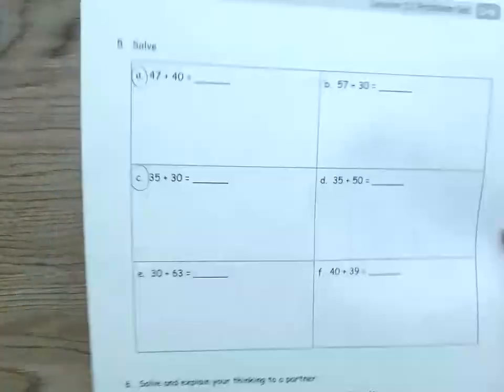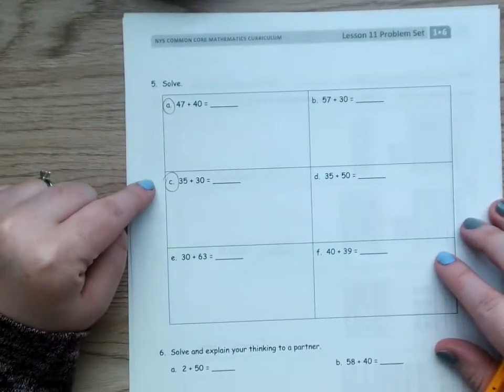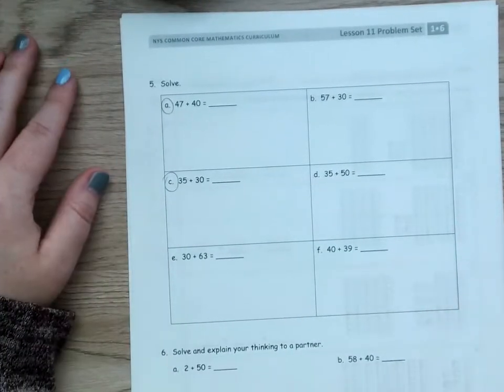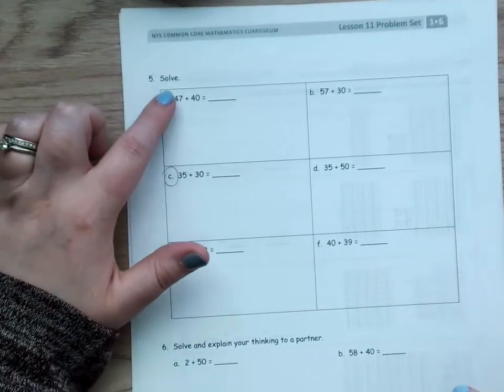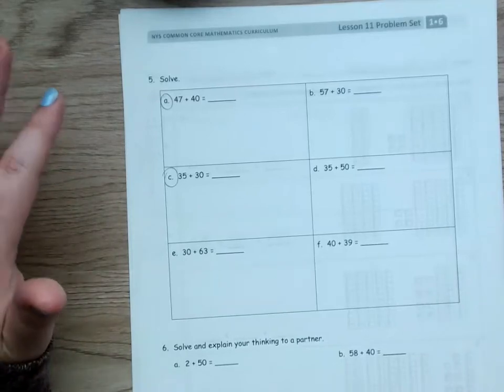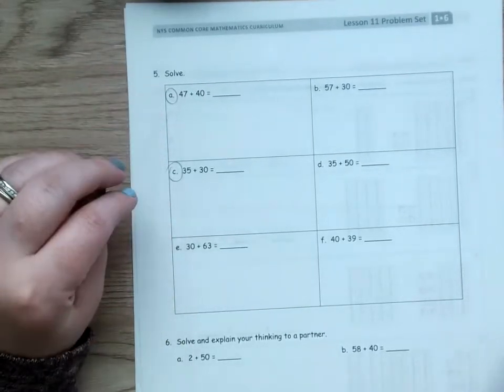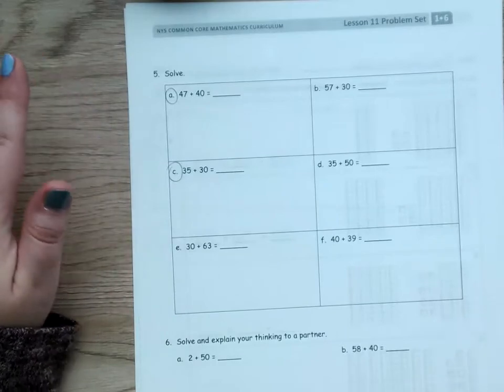Now, on the back, I'm going to help you with letter A and letter C. This time, we don't get a picture. Okay? So, it just tells us to solve. We get to pick the way we're going to solve. This is where it gets fun for us because we get to pick the way that we like the best.